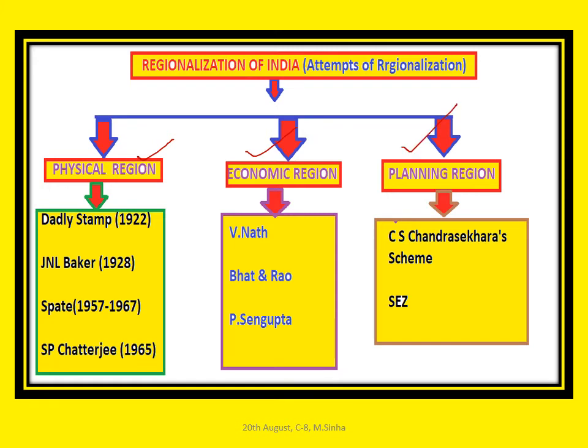The physical region is based on physical criteria and physical characteristics. The history of delineating India on the basis of physical region is ancient. It started with L.D. Stamp in 1922, who divided India into three major natural regions and 22 sub-regions. The basis of Stamp's regionalization was the homogeneity of physical region — physiography and climate.